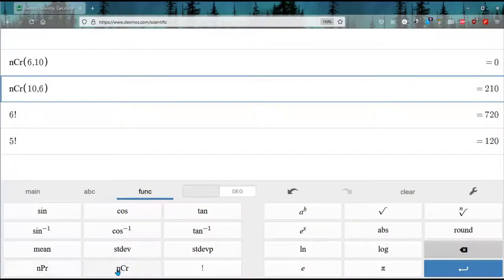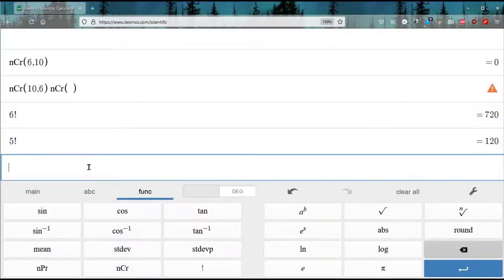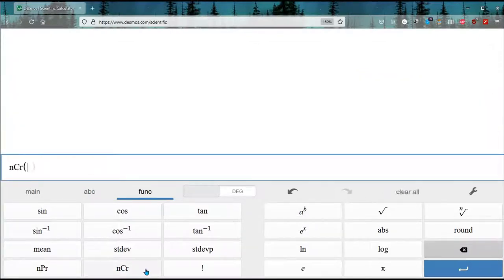And first you type the ncr function. Oops, get down there, clear. You do ncr, now there's two numbers in here. The 10, the big number is first, little number is second, and close the parentheses. Gives us 210.